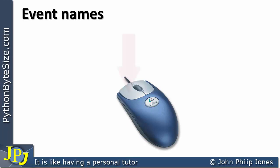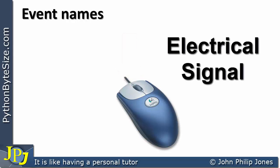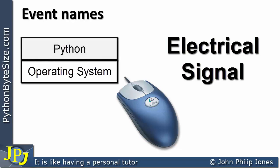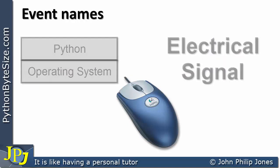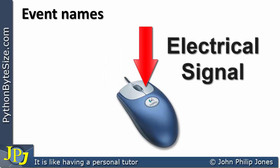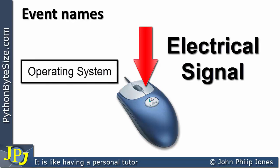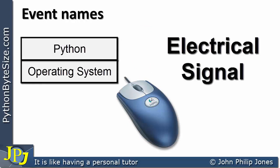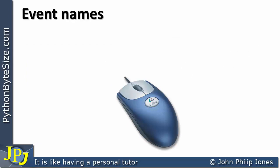Consider this mouse. If the user clicks on the left button, the mouse will generate an electrical signal and the computer, through the operating system, is able to identify that signal and detect which of the buttons has been clicked. Python sits on top of the operating system and through the use of the operating system, it too is able to see which of the buttons on the mouse have been clicked.